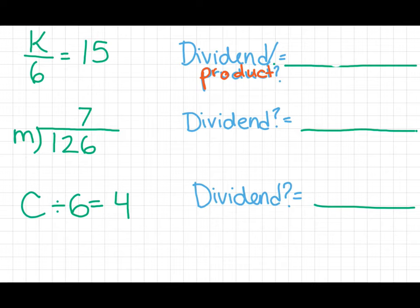Actually, I'm going to move it over here. It's K. Where is the dividend in 126 divided by M equals 7? Well, it goes inside the divisor box. So 126 is your dividend or your product. Where is your dividend in C divided by 6 equals 4? Yes, it's C.